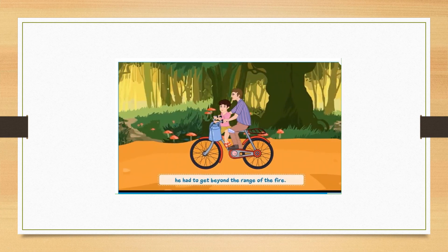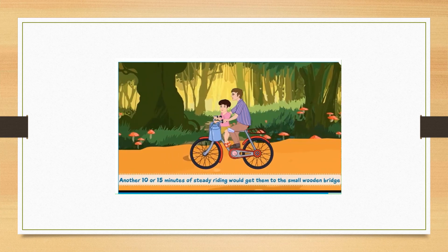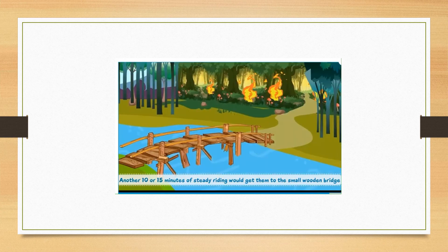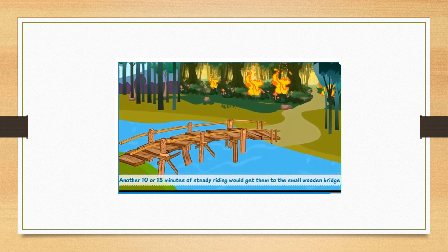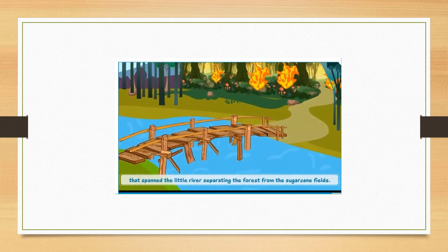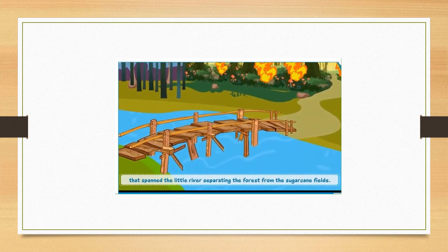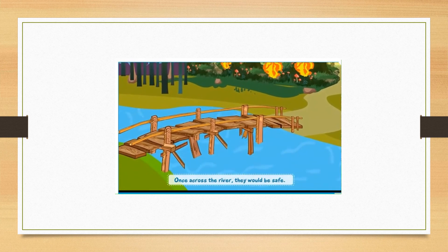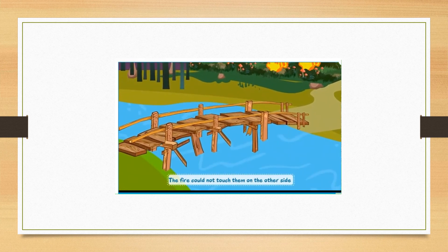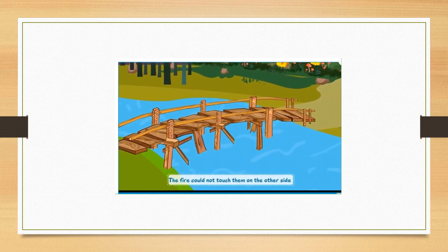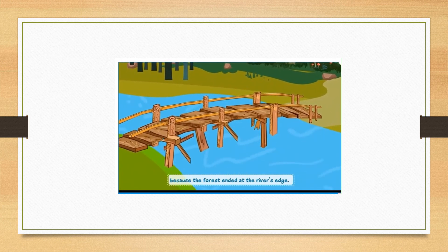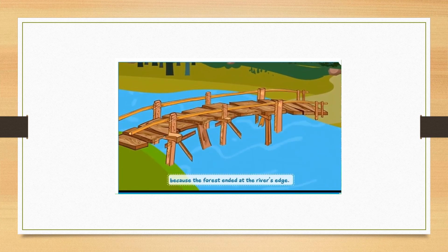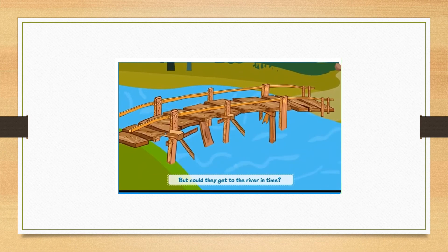He had to get beyond the range of the fire. Another 10 or 15 minutes of steady riding would get them to the small wooden bridge that spanned the little river separating the forest from the sugarcane fields. Once across the river, they would be safe. The fire could not touch them on the other side because the forest ended at the river's edge. But could they get to the river in time?